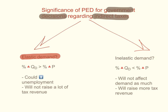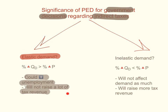Because the quantity demanded will drop significantly, it won't raise a lot of tax revenue. So it's not always a good idea for governments to tax products that have elastic demand.